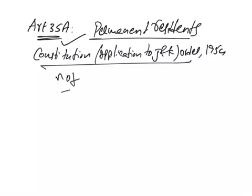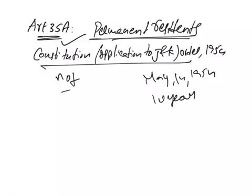The Jammu and Kashmir Constitution adopted on November 17, 1956 defines a permanent resident as a person who was a state subject on May 14, 1954 or who has been a resident of Jammu and Kashmir for 10 years and has lawfully acquired immovable property in the state. This provision does not allow people from outside J&K to work, settle, or own property in the state. It also denies property rights to women who marry a non-permanent resident and to their children.